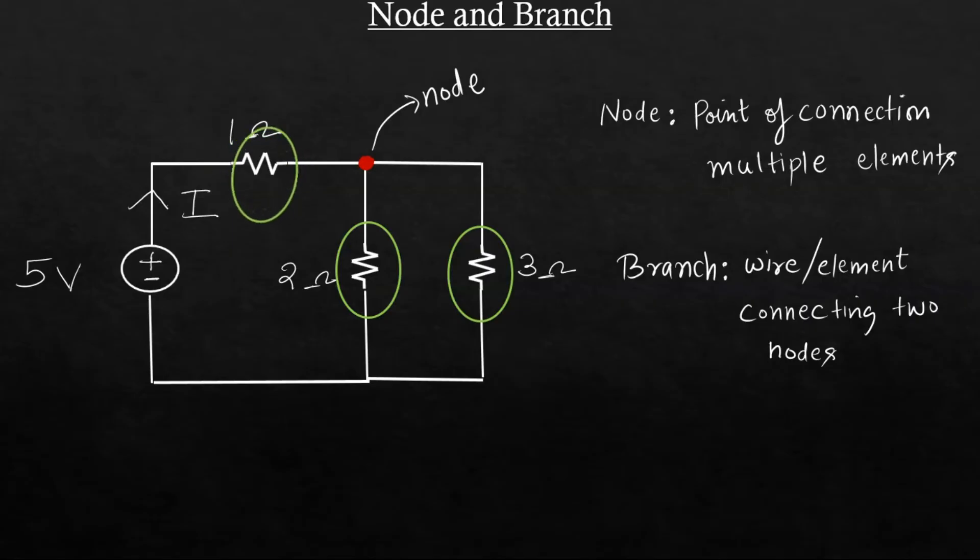Like this 1 ohm resistor is a branch. This 3 ohm resistor is a branch. And the 2 ohm resistor is also a branch. So basically these terms are usually defined in graph theory but they are applicable for any general circuit.